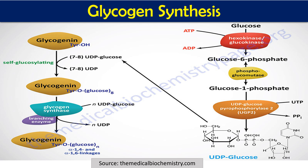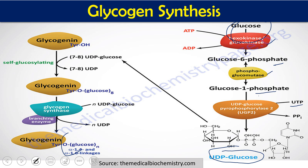The glycogen synthesis pathway starts from glucose. Glucose is converted to glucose-6-phosphate by glucokinase or hexokinase, then isomerized to glucose-1-phosphate by phosphoglucomutase. Glucose-1-phosphate reacts with UTP to give UDP-glucose, which is the ultimate substrate for glycogen synthesis. UDP-glucose transfers glucose to the primer protein glycogenin multiple times. Finally, glycogen synthase — along with branching enzyme, together forming a bifunctional enzyme — synthesizes the glycogen molecule.